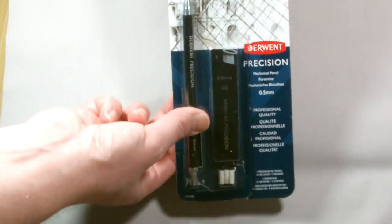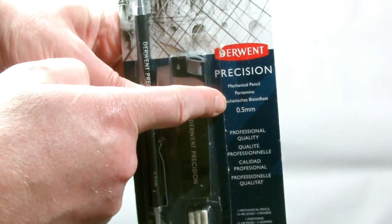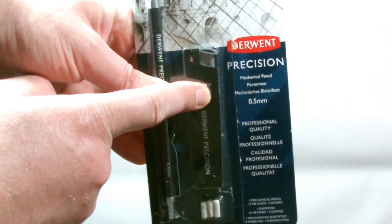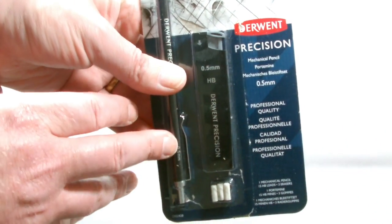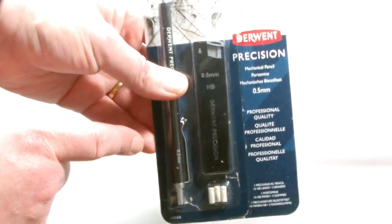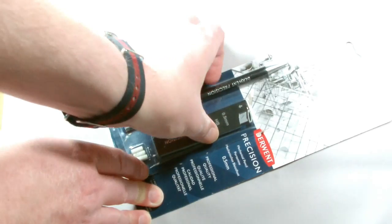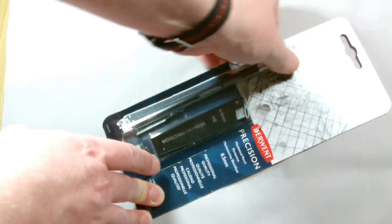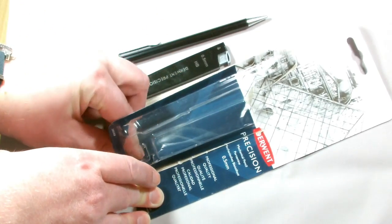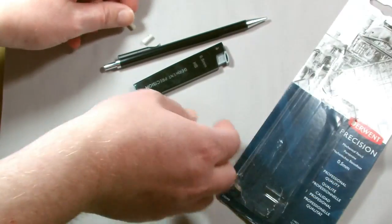Also down at the bottom here, you can see that there are three spare erasers and you also have this plastic case in here which houses 15 spare leads. Now also you can see here that this is a 0.5mm pencil. The other pencil that Derwent do is 0.7mm so they have two types. Both the pencils are exactly the same, just different core sizes, barrel sizes, that type of thing. So let's open this and have a look inside and we'll find out what the pencil is like.